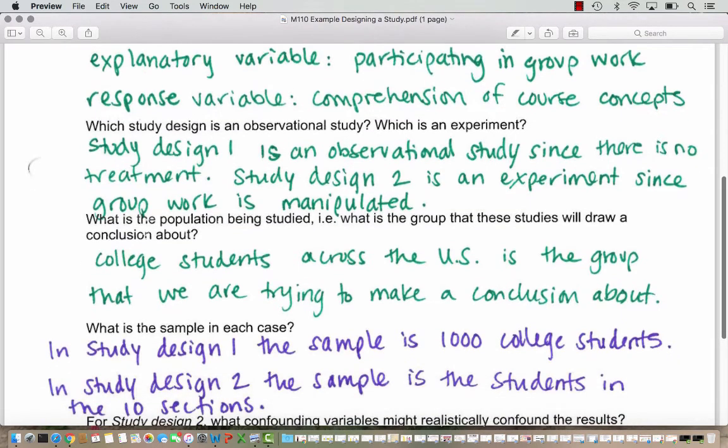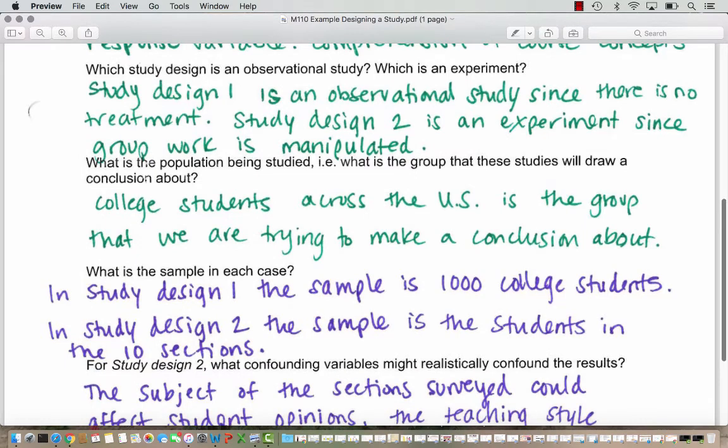The sample in study design one is a thousand college students from across the U.S. In study design two, the sample is the students in those ten sections. We don't know how big each of those sections are - they could be 30 students, they could be 50 students or more. So we can just say the students in the ten sections, but not an exact count.